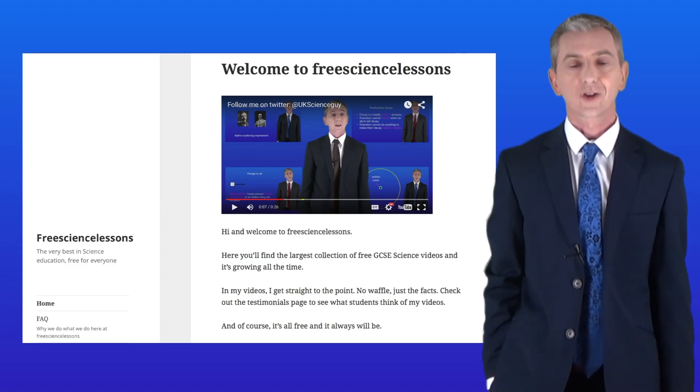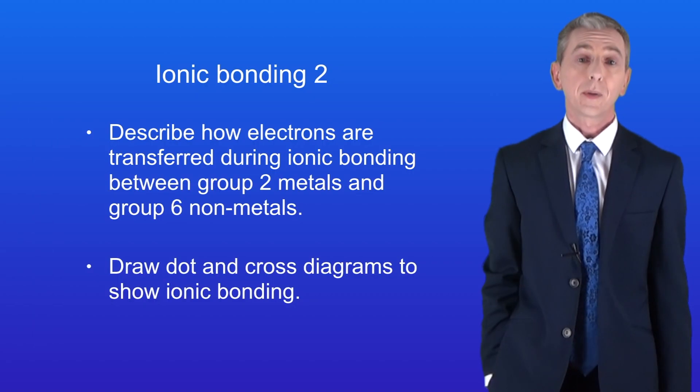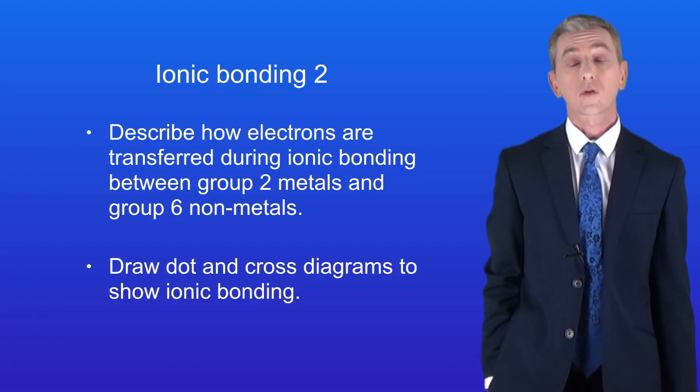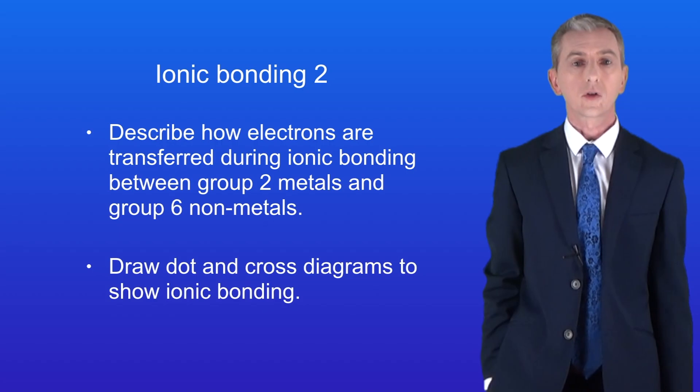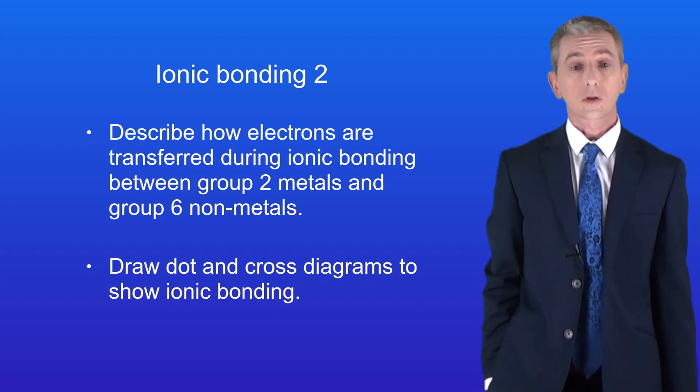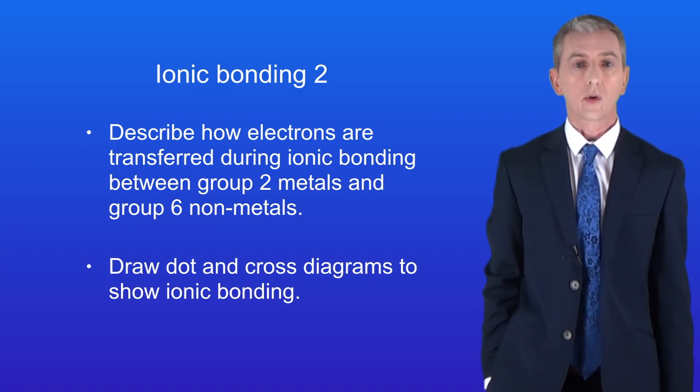Hi and welcome back to freesizelessons.co.uk. By the end of this video you should be able to describe how electrons are transferred during ionic bonding between group 2 metals and group 6 non-metals. You should then be able to draw dot and cross diagrams to show ionic bonding.